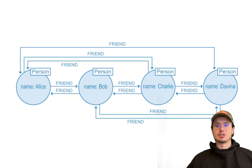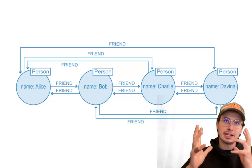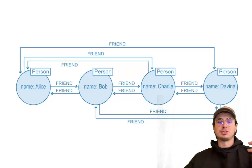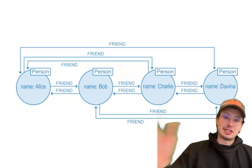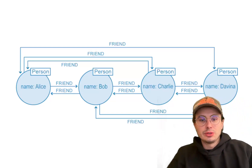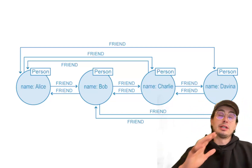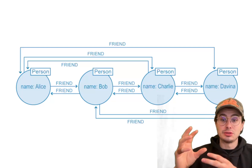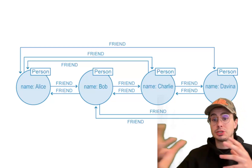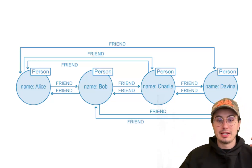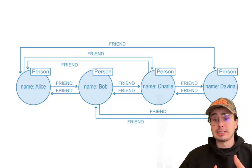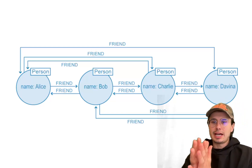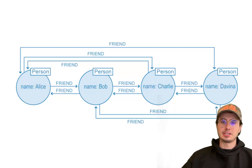The primary benefit is the speed and efficiency this adjacency brings to graph traversals. When querying for relationships, the database can move swiftly from one node to its neighbors, maintaining high performance even as the depth and complexity of the query increases. This is really advantageous for deeply nested or highly interconnected data — like social networks, recommendation systems, and fraud detection that Neo4j is primarily used for. It also enhances scalability: as the graph grows, traversal time remains relatively constant, allowing you to handle larger data sets without a proportional increase in latency.